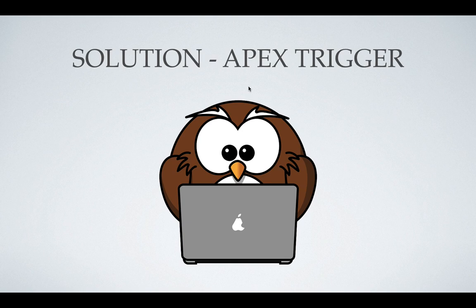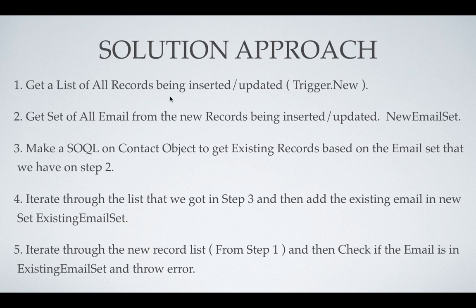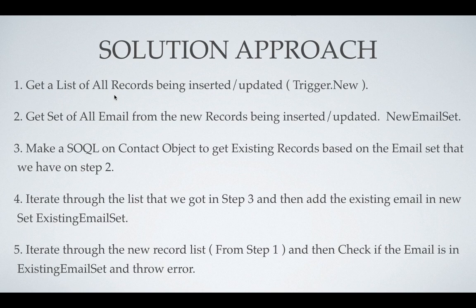So the duplicate rule is not the right solution for us. The second option is Apex trigger. With an Apex trigger we get events: before insert, before update, and after undelete. We will execute the trigger and throw an error. The approach will be: first, get all the records being inserted or updated, then get a list of emails to check — if there is any duplicate email, we will throw an error to the user that they cannot insert a record with a duplicate email.